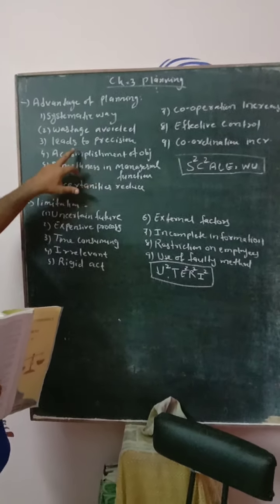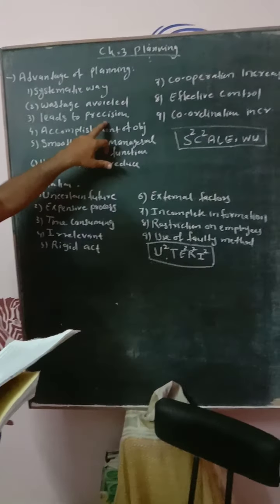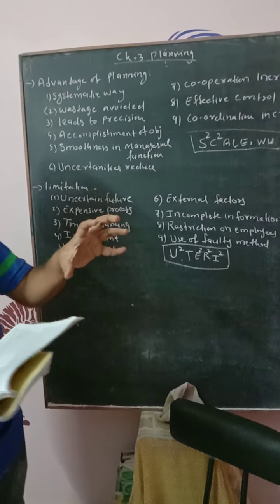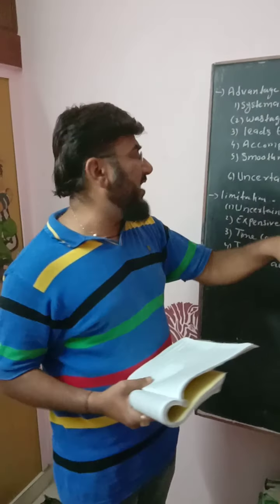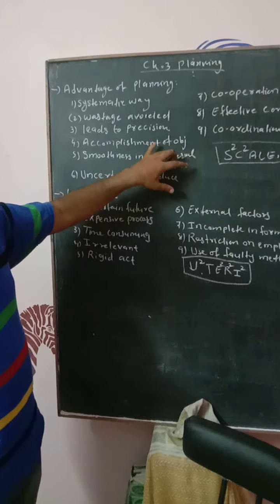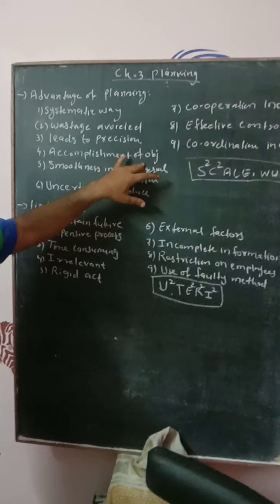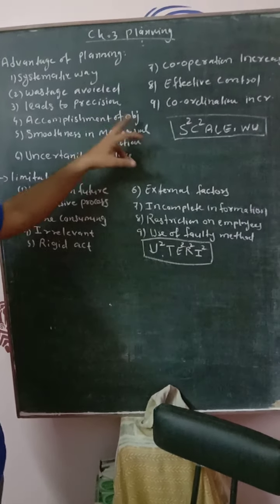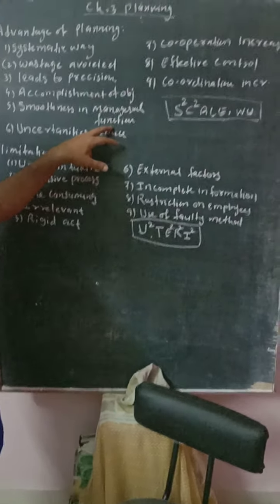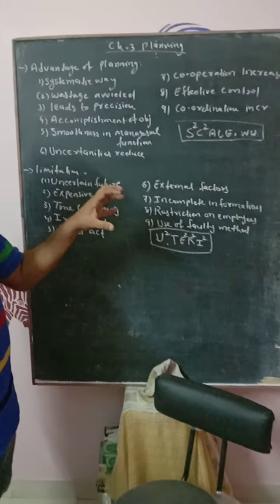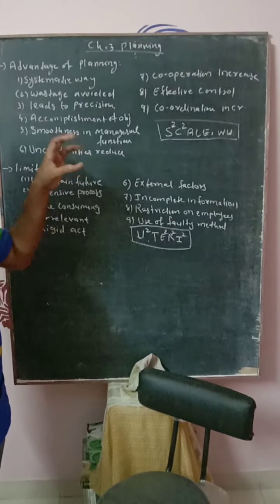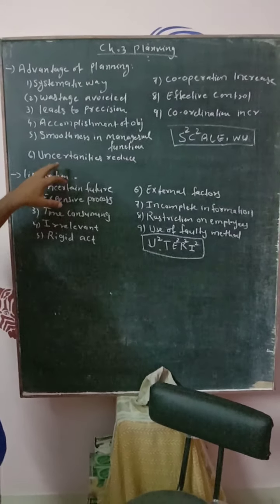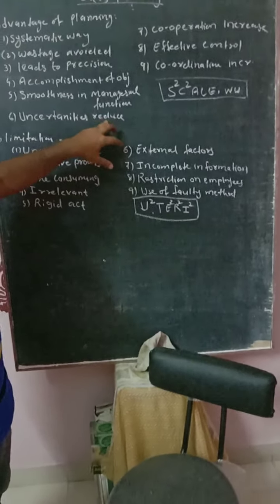Proper plans lead to precision — meaning every thing becomes perfect. Then accomplishment of objectives becomes easy — we can achieve our goals very smoothly. Smoothness in managerial functions: planning, organizing, staffing, directing, controlling — all managerial activities are done after planning, so if planning is proper, other functions will work smoothly. Uncertainties can also be reduced.